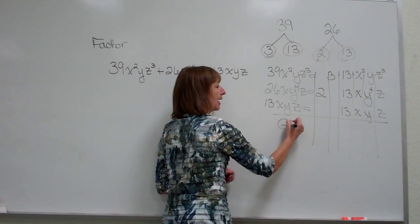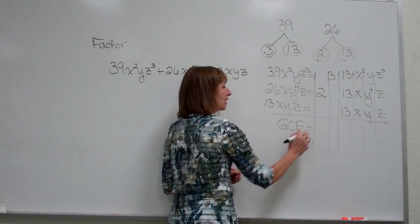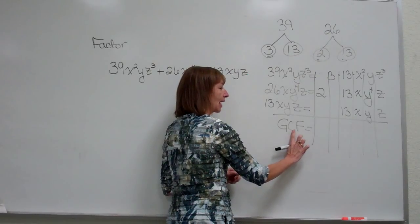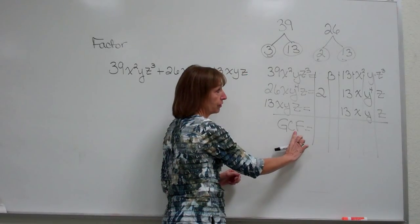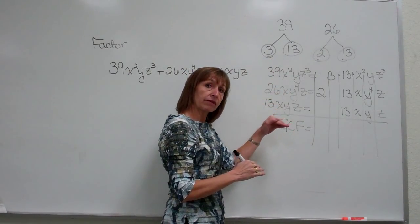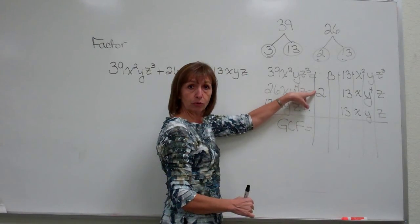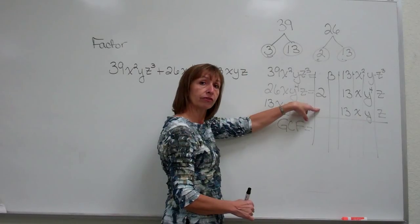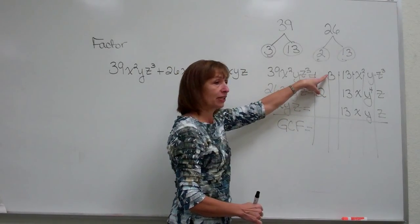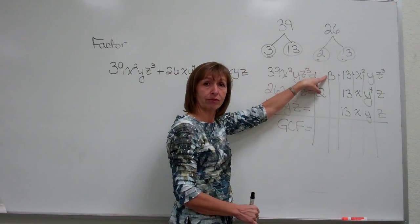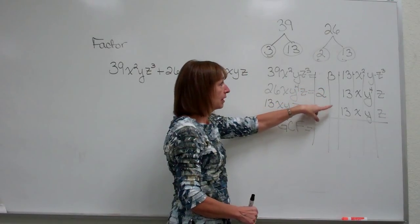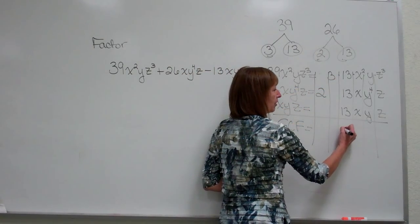And for my greatest common factor, it's the biggest factor that's common to all the terms. So it's got to be in every single one of those lines to be able to bring it down as a common factor. So I can't use a 2 because there wasn't a 2 factor in the first and third terms. I can't use a 3 because there wasn't a factor of 3 in the second and third terms. But 13 is a factor in all of the terms.